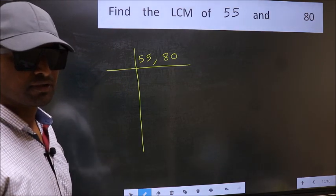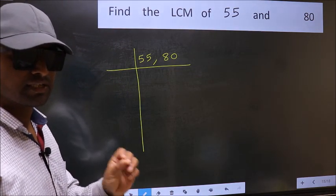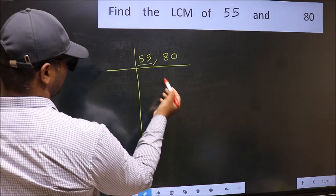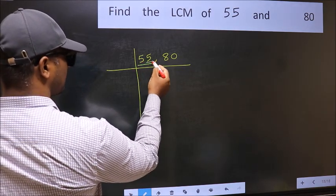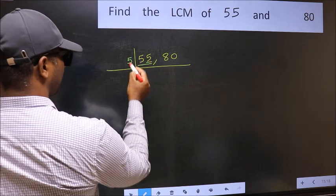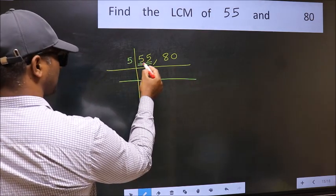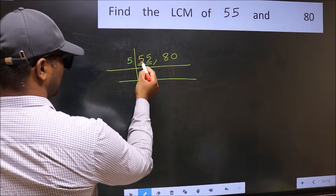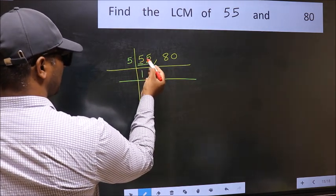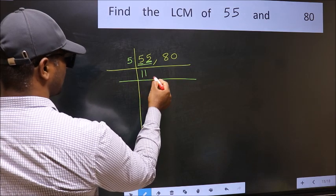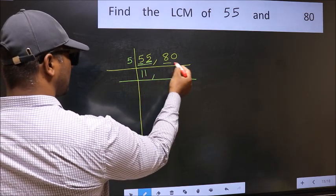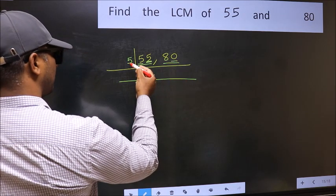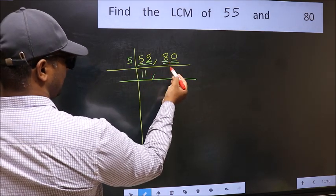Now focus on the first number, which is 55. The last digit is 5, so take 5. First number 5 — when do we get 5 in the 5 table? 5 once is 5. The other number is also 5 — 5 once is 5. The other number is 80. Last digit 0, so this is divisible by 5. First number 8.